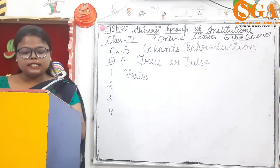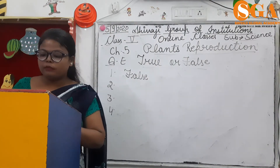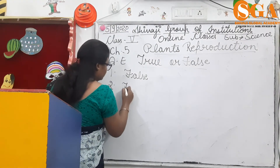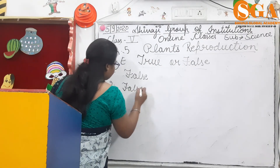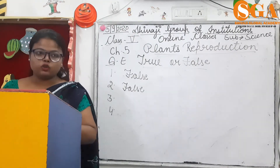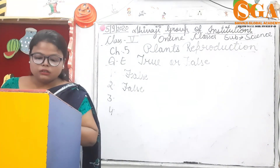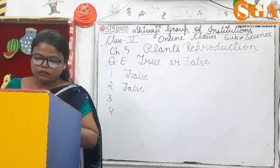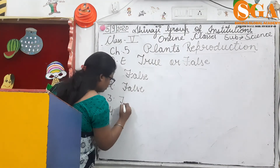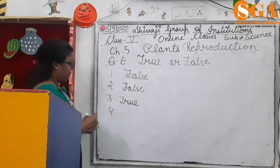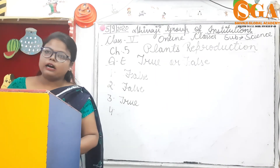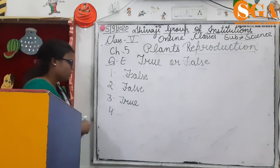Second: all seeds grow immediately when we put them in soil — absolutely false, because when we put a seed into the soil it takes some time to grow into a matured plant. Third: plants scatter their seeds for proper growth — true. Fourth: fruit and seed formation occur after fertilization — true.